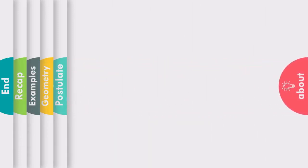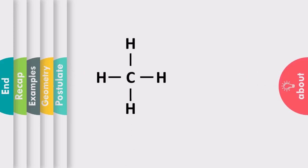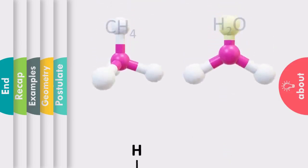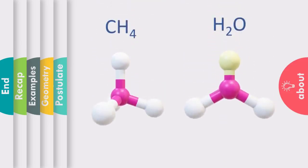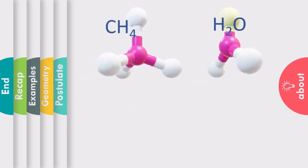If I ask you to draw the Lewis structure of methane or water molecule, you will easily be able to do it. This is the structure of methane and this is the structure of water molecule. But have you ever imagined how they would look like in three dimensions? This is where the VSEPR theory comes in — it helps us in identifying the structure of a molecule in three dimensions.